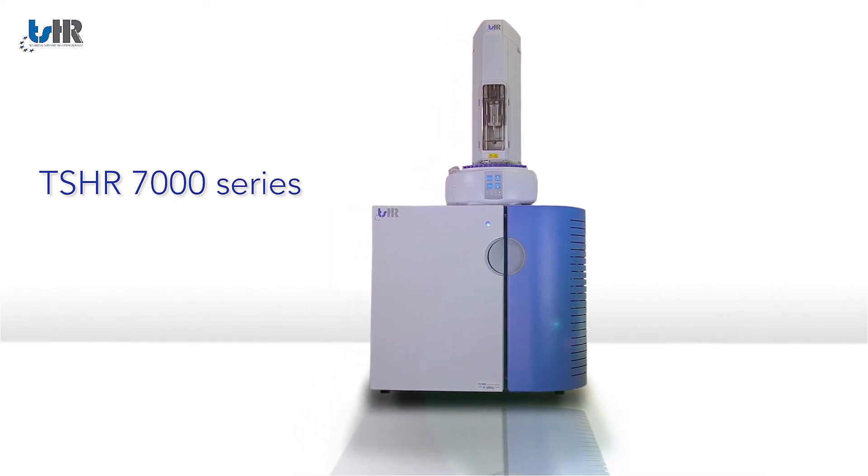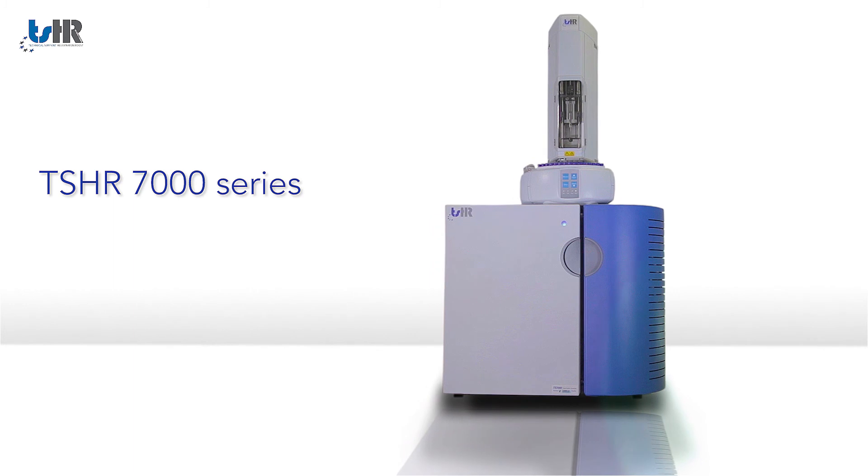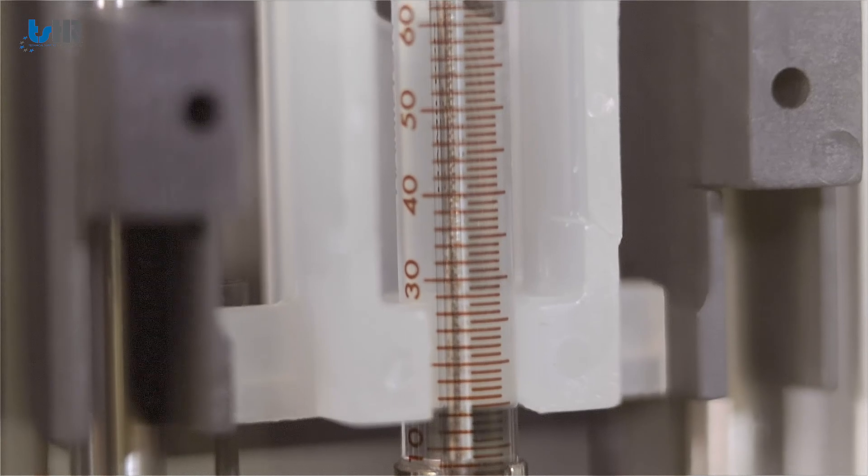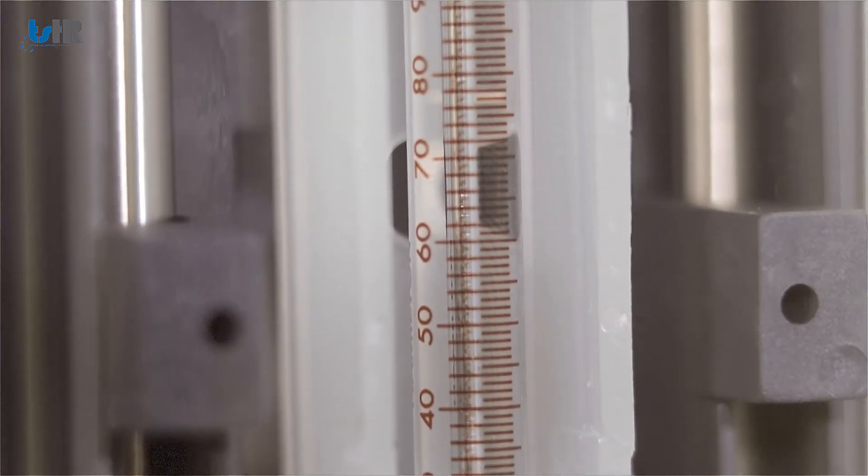The 7000 series with vertical sample introduction and combustion is a very small bench space combustion analyzer which provides very accurate data down to low PPB level.